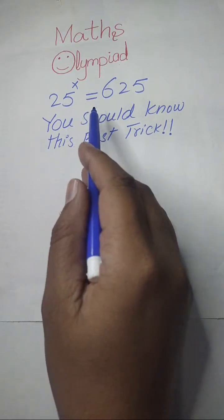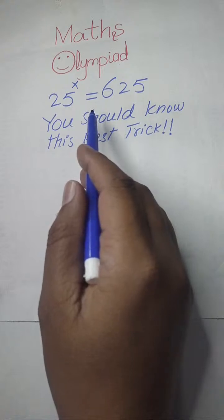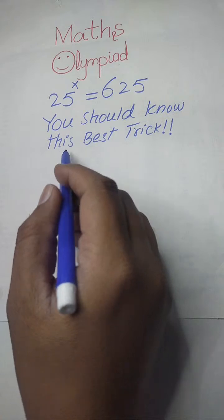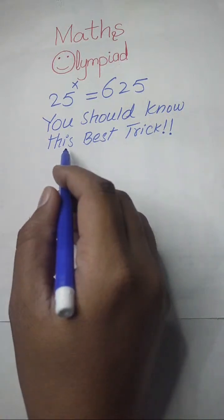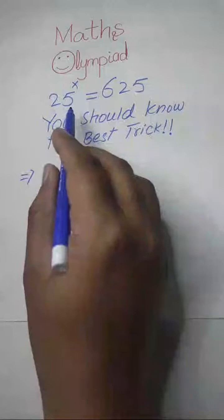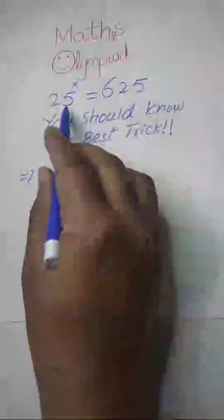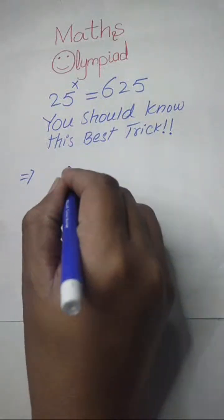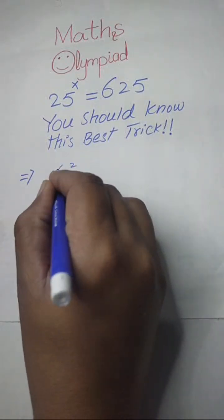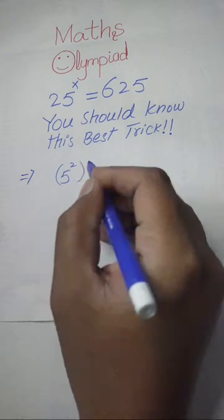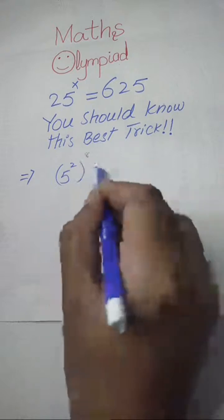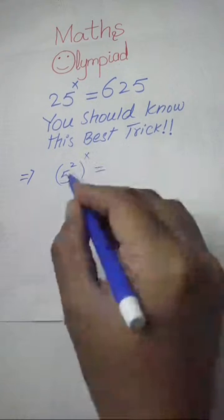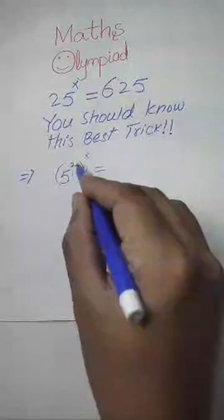Here we will apply the exponent laws to find the value of x. First thing we are going to do is write 25 as 5 to the power of 2. We know that 5 to the power of 2 becomes 25, so we write it as (5^2)^x equals 625.